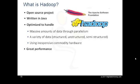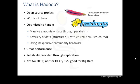However, it is a batch operation handling massive quantities of data, so the response time is not immediate. As of Hadoop version 0.20.2, updates are not possible, but appends will be possible starting in version 0.21. Hadoop replicates its data across different computers so that if one goes down, the data are processed on one of the replicated computers. Hadoop is not suitable for online transaction processing workloads where data are randomly accessed on structured data like a relational database.